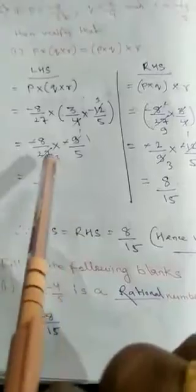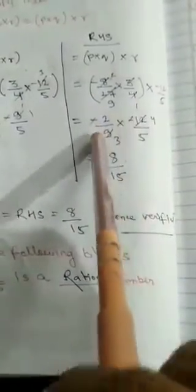The two minus signs also cancel, giving 8 by 15. Now solve the right-hand side: (P × Q) × R = (minus 8 by 27 × 3 by 4) × minus 12 by 5. Cancel 3 and 27, cancel 4 and 8 — getting minus 2 by 9 in the bracket. Multiply minus 2 by 9 into minus 12 by 5: cancel 3 and 9, cancel 4 and 12 — giving 8 by 15. Left-hand side equals right-hand side equals 8 by 15.